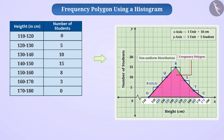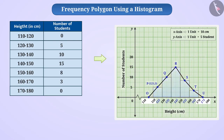With the help of frequency polygons, we can find an increase or decrease in frequency — that is, a trend. Similarly, frequency polygons also help in comparing two different figures of similar nature.